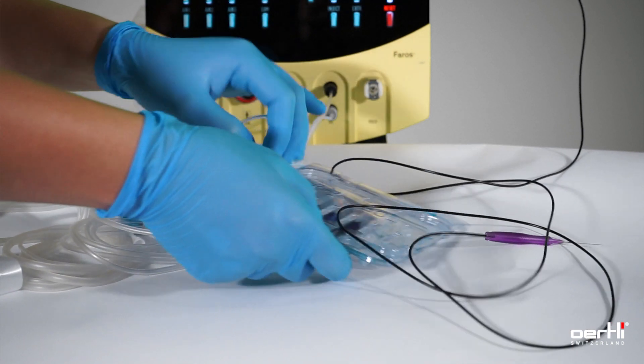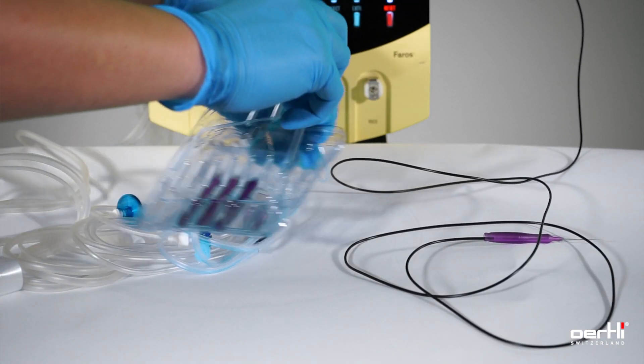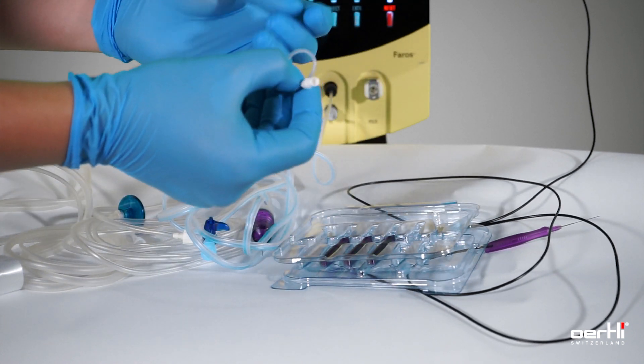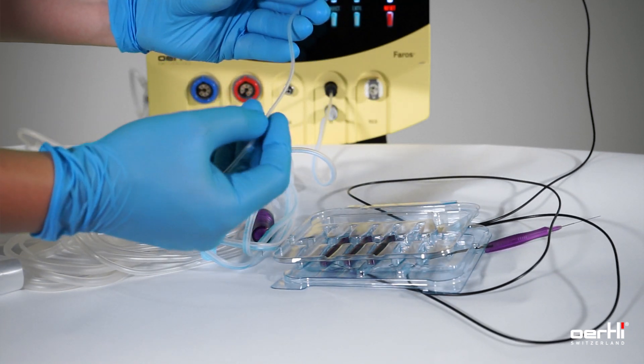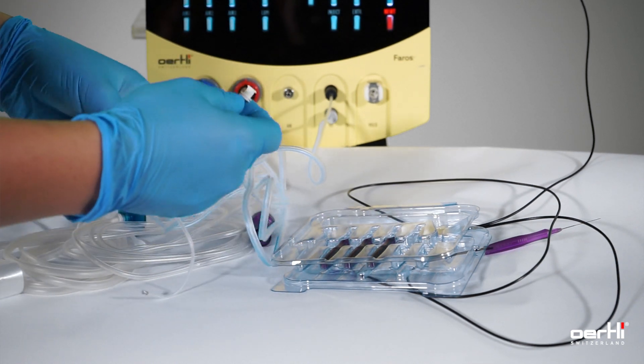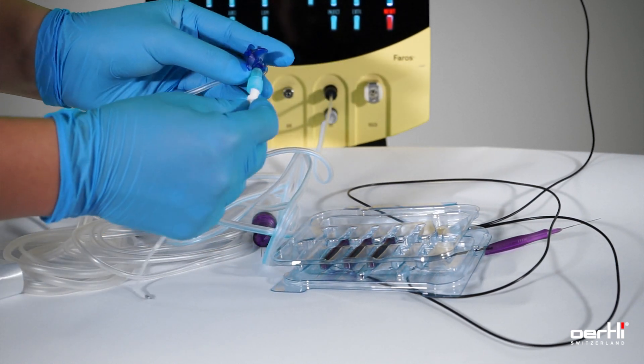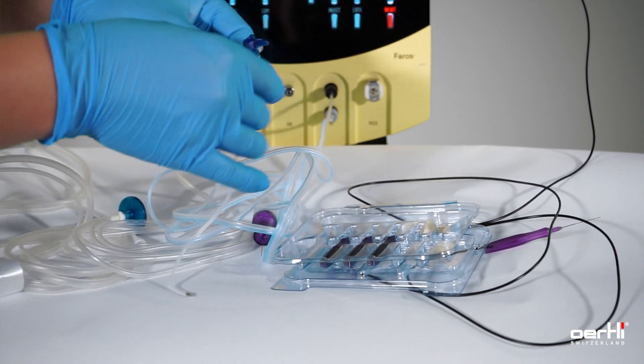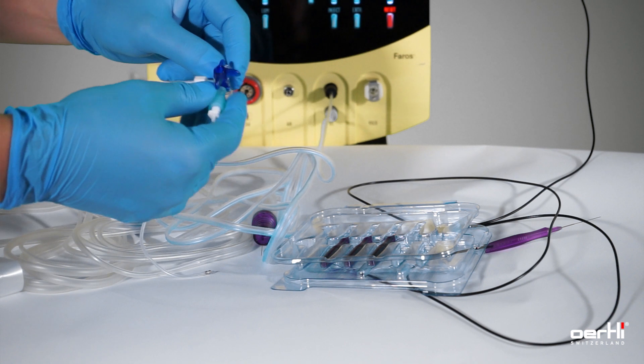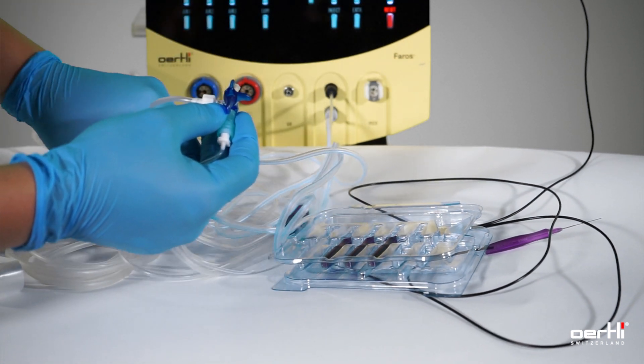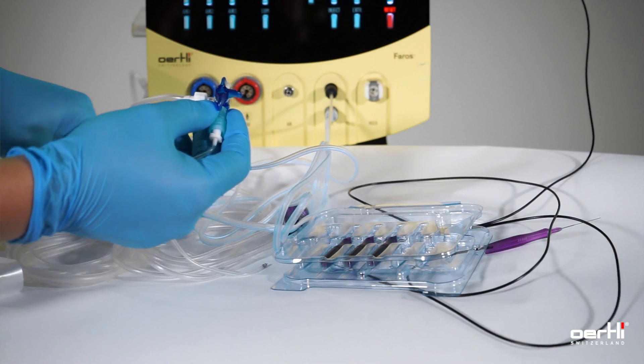Out from your trocar box, you use that short infusion line and connect it with the three-way stopcock. And the final port, you connect with the irrigation line from the cassette.